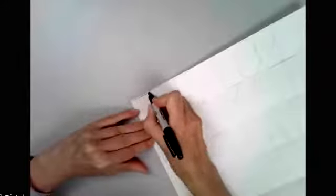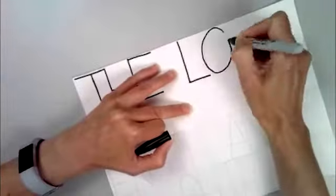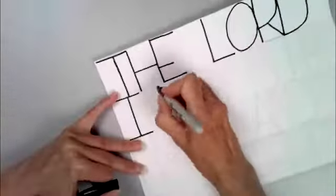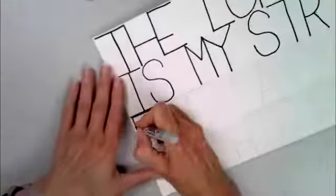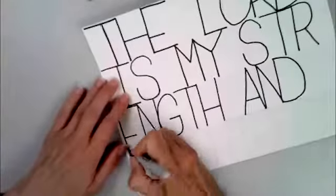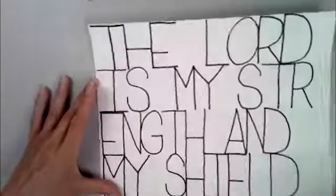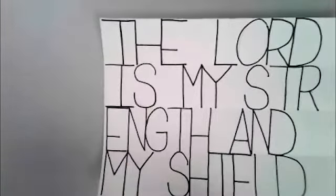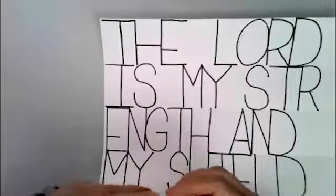Once you have it the way you like it, get out a permanent marker and let's go over all of your pencil lines in a black permanent marker. Again, I'm going to speed this video up. Now take a look at your paper and you might see some pencil lines. Get out your eraser, erase those pencil lines before we start painting.